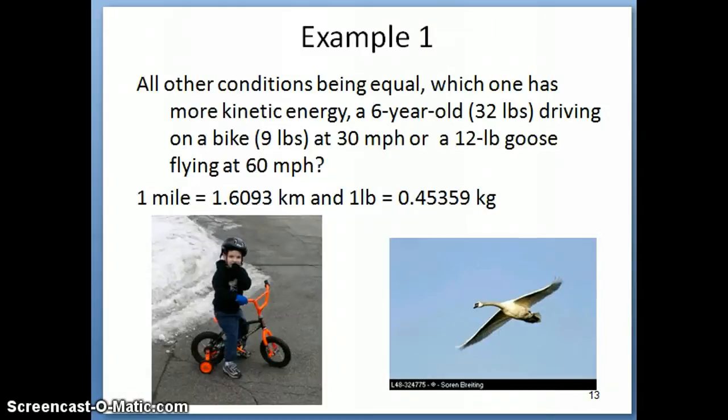Okay, so here I just want to work through an example of just showing you how you can use these equations that we talked about in the previous slide to calculate and to compare energy of two different objects. So in this case, we're going to be calculating kinetic energy of two objects. One of them being a six-year-old boy on his bike who is going to be biking at 30 miles per hour, and the weight of these two objects, which is the boy and his bike, is given here. And then you're comparing the kinetic energy of that boy with the kinetic energy of a bird that's flying at 60 miles per hour, and the bird weighs about 12 pounds, okay? And there's conversion factors given here to compare the masses, I mean the energies of these two objects.